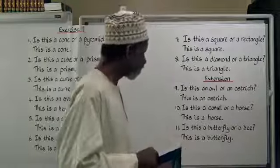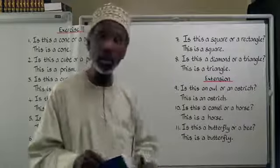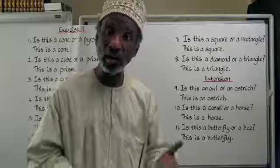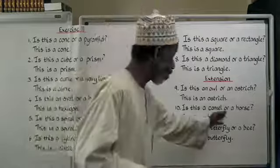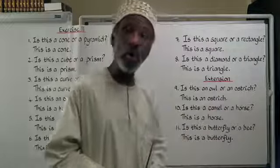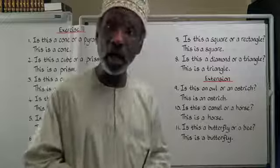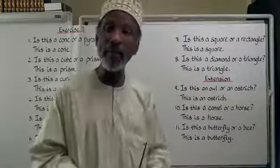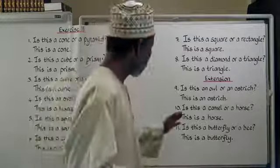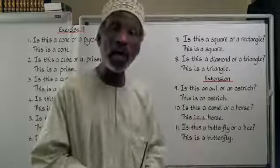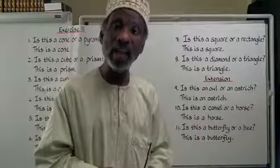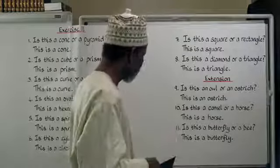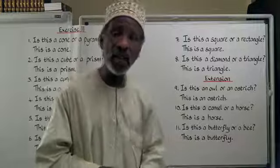Number 10: is this a camel or a horse? Camel is جَمَلٌ and horse is حِصَانٌ. هَلْ هَذَا جَمَلٌ أَمْ حِصَانٌ. This is a horse — هَذَا حِصَانٌ.